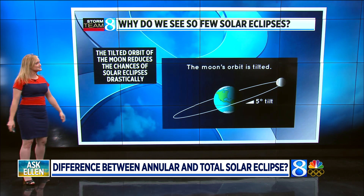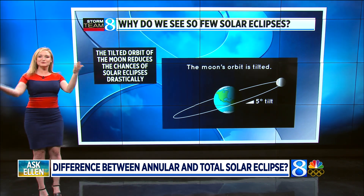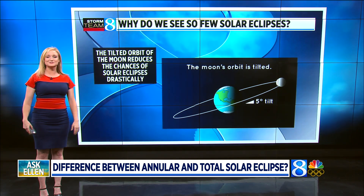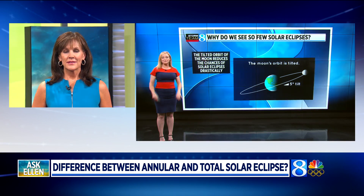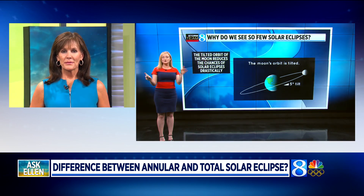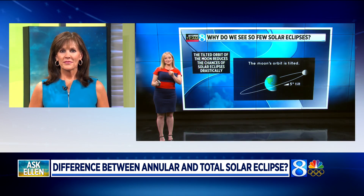So why don't we see these too frequently? It's because the moon is on a five-degree tilt, so these only happen one to two times a year across the entire world.